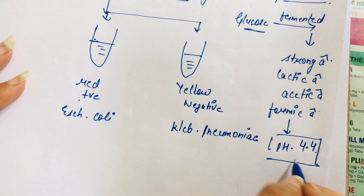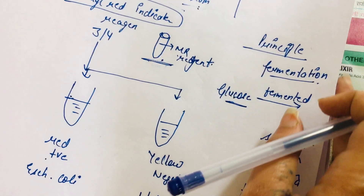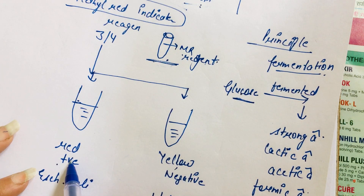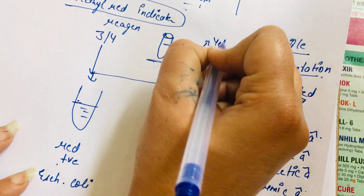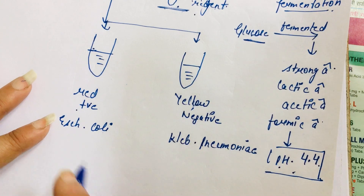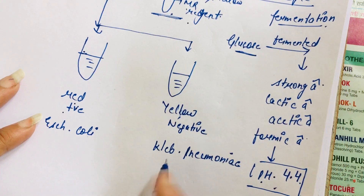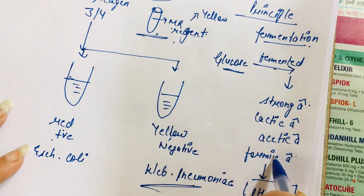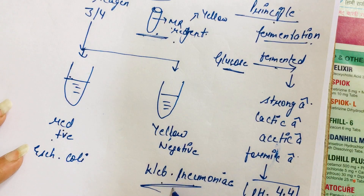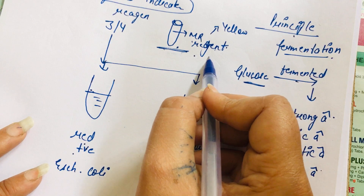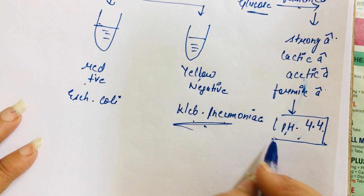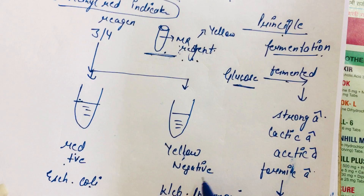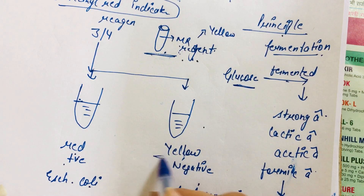Because of the low pH, the MR reagent changes its color from yellow to red. The original color of MR reagent is yellow, but in acidic conditions it converts to red. If Klebsiella pneumoniae is present, glucose is not fermented into strong acids, the pH does not drop sufficiently, and the MR reagent does not achieve the pH needed for color conversion — so it remains yellow.